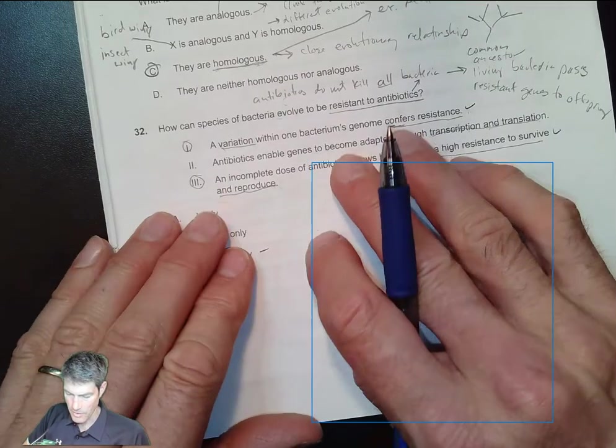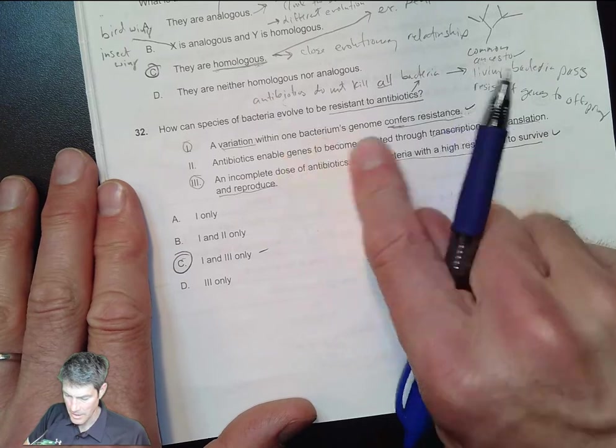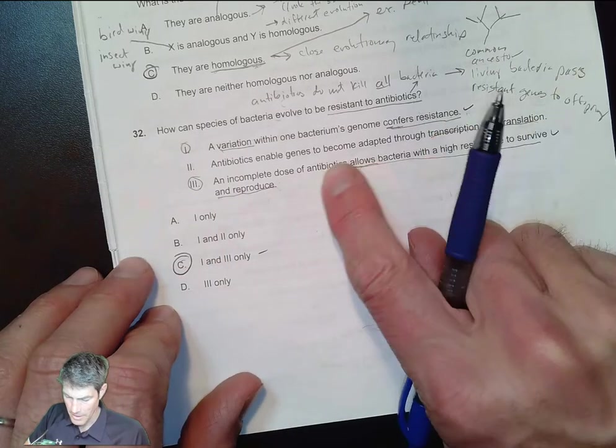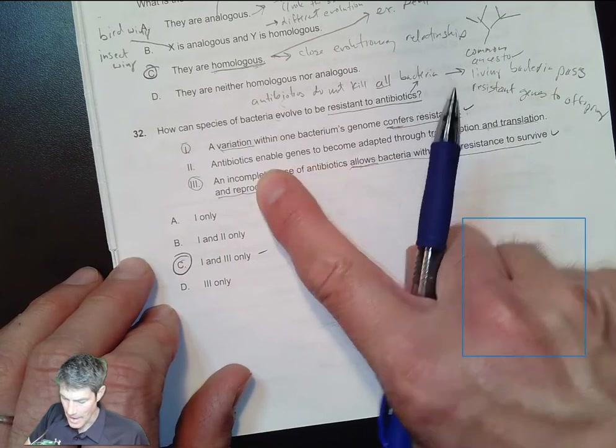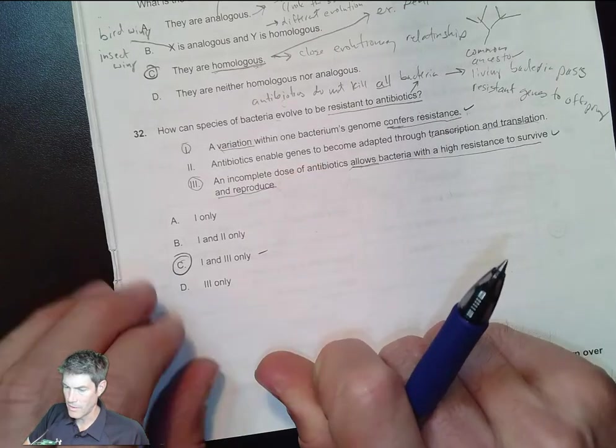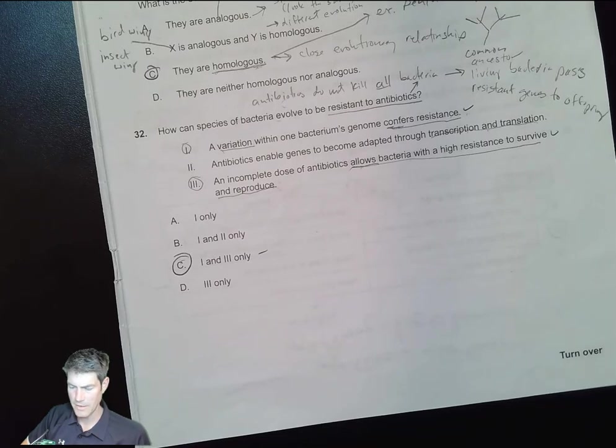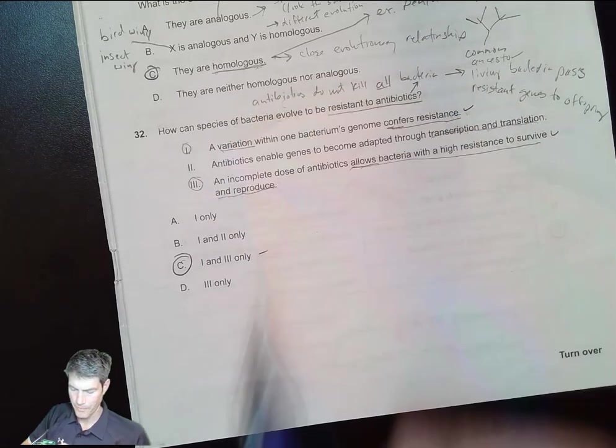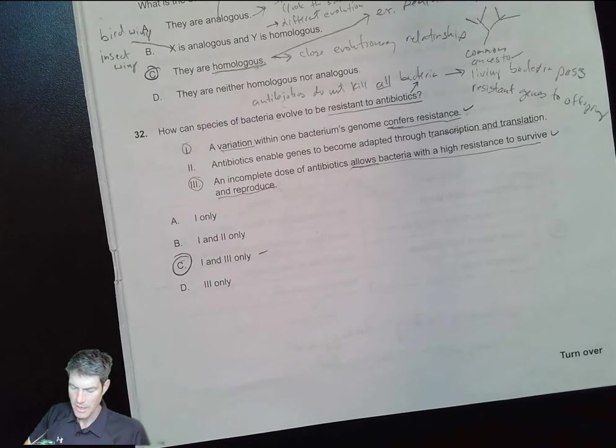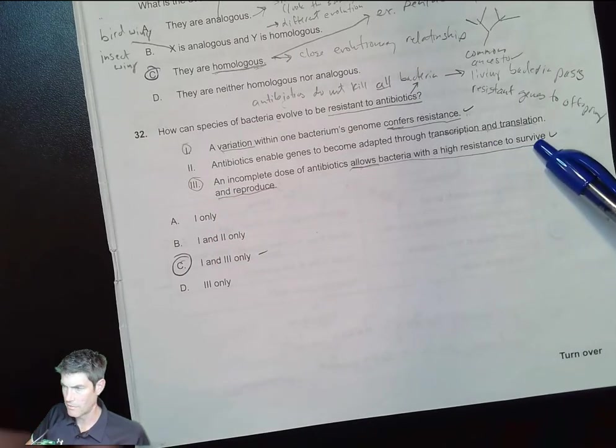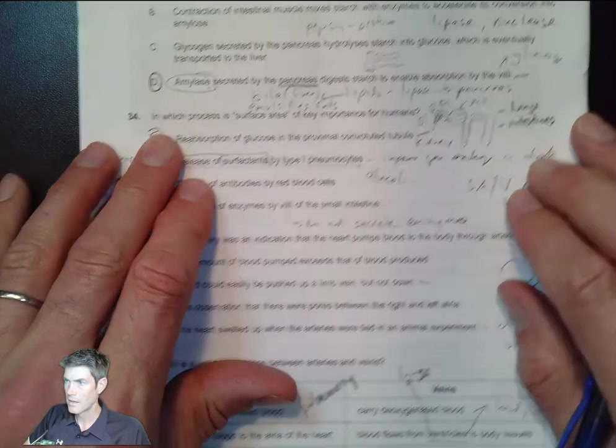How can we evolve bacterial resistance? Variation within one genome confers resistance - that is correct. Antibiotics do not enable genes on their own, they just give a situation where some genes are favored, but the antibiotic itself doesn't do the enabling. Incomplete doses of antibiotics allow those ones that are pretty resistant to survive and reproduce.